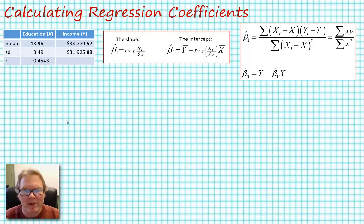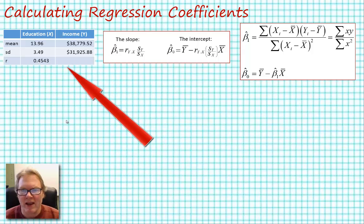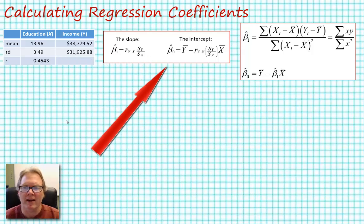We can use the formula in the middle to calculate the slope and the intercept if we have access to five numbers. We need the mean and standard deviations of both our independent and our dependent variables, our x and our y variables, and we need the correlation coefficient of those two variables. If we have those five pieces of information, the calculation is relatively straightforward and you can use a handheld calculator.